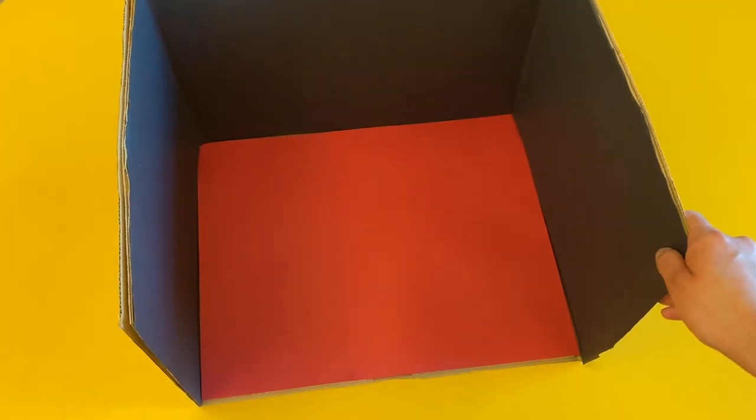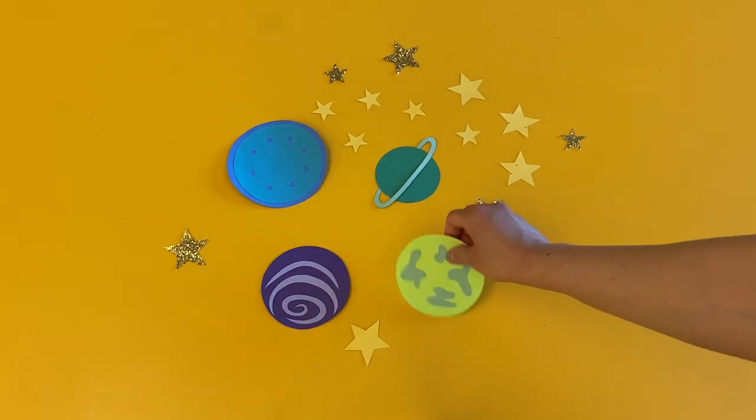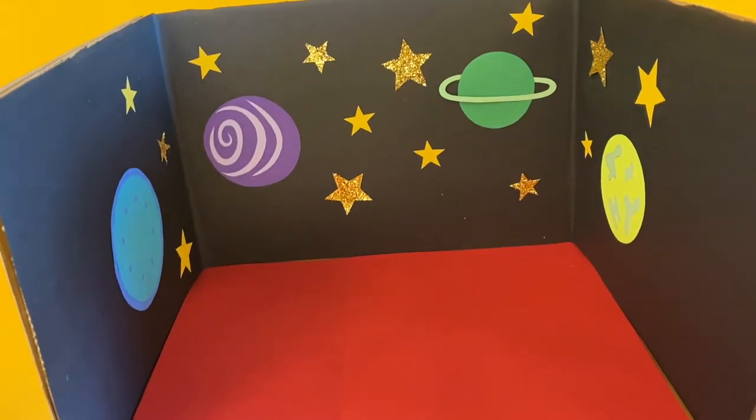Now I'm gonna add details to the background. My movie will be set in space so I made these planets and stars for my set. Don't forget your set can be anything you want like the ocean or a jungle or a made up place. Now I'm gonna glue these to the back of my set and then show you what it looks like. Here's my finished set with everything glued to the back.